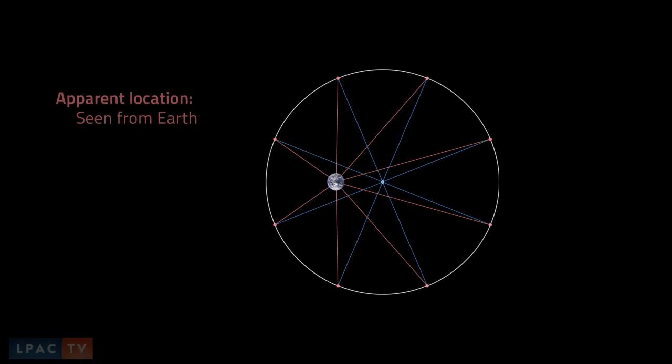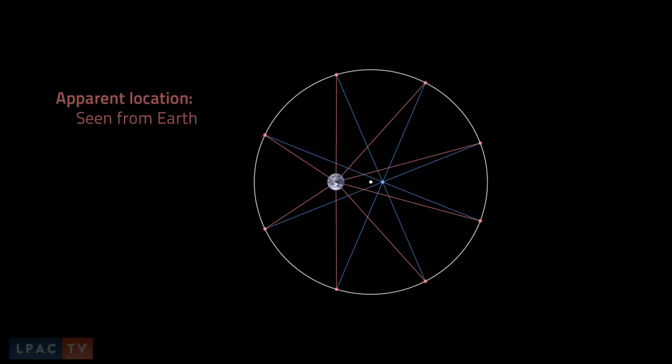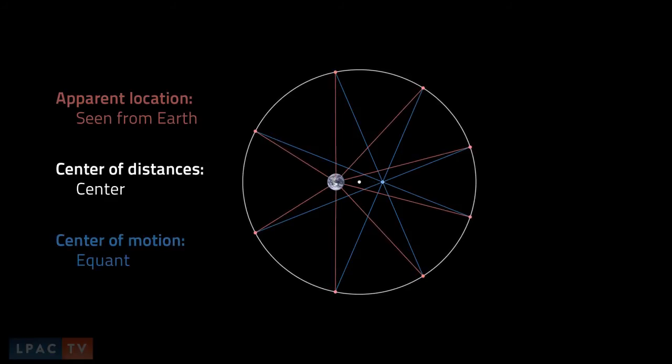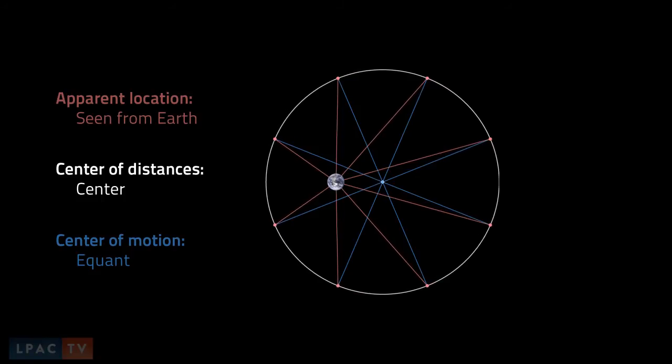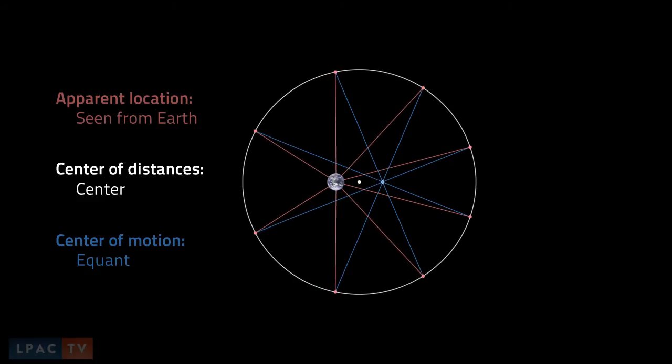So Ptolemy made a second adjustment to the deferent. He split the center in two. There would now be two centers, a center of distances and a center of motion. The planet, or rather the center of the planet's epicycle, would move in the shape of a circle around the center of distances, but its speed would be determined by moving at a constant angular rate around the center of motion. This center of motion was called the equant.